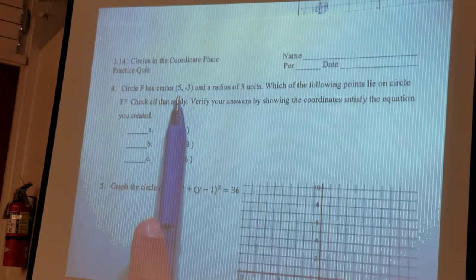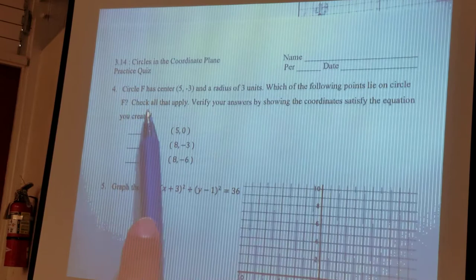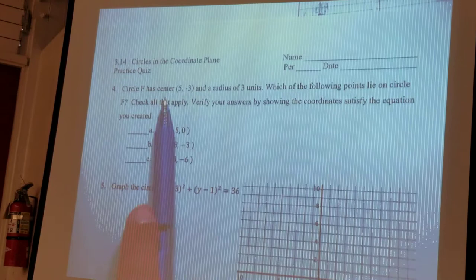Okay, this is question 4. It says, Circle F has a center of 5, negative 3, and a radius of 3. Which of the following points lie on the circle F? Check all that apply. Verify your answers by showing the coordinates satisfy the equation you created.